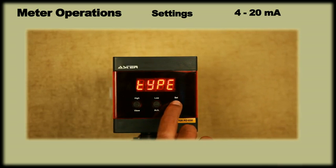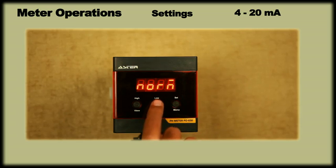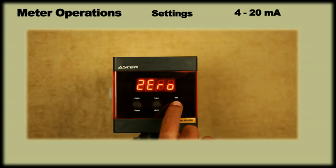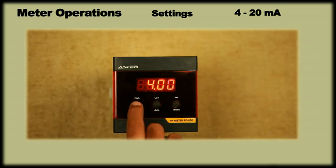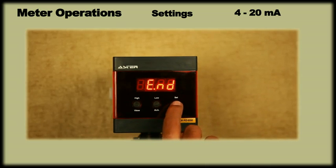On pressing menu, display will show type. On pressing menu again, we can choose the type as either normal that is 4 to 20 or inverse that is 20 to 4 using the ACK key. Then press menu to save and set the 0 value. After setting the 0 value, press menu twice to set the span value. Having changed the span value, press menu twice to end and save the setting.